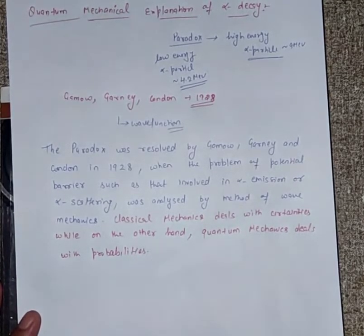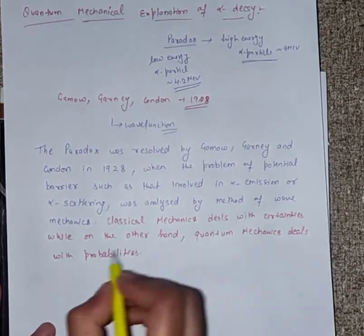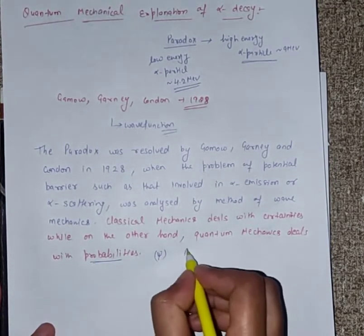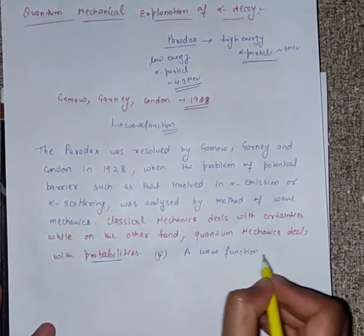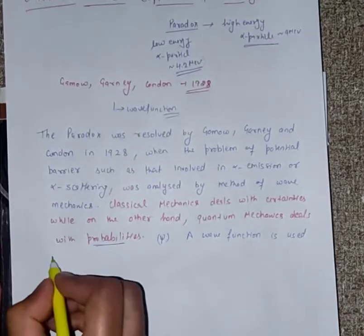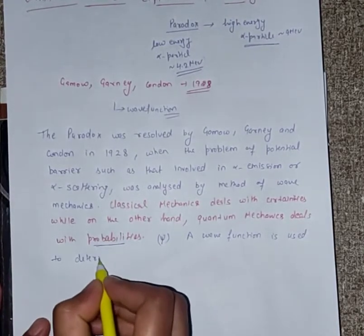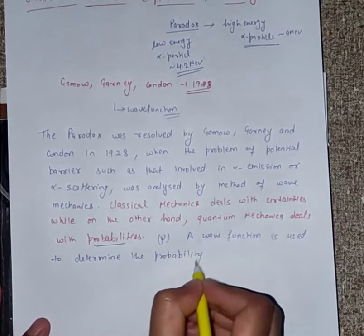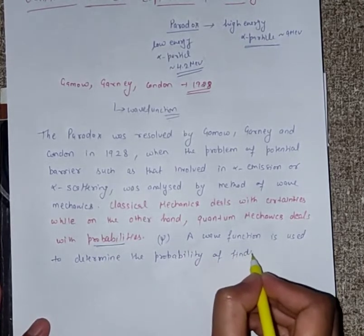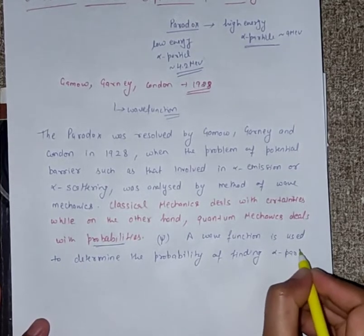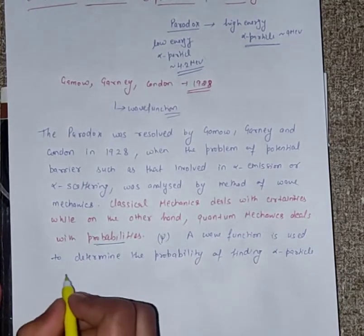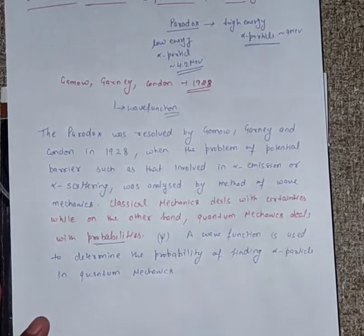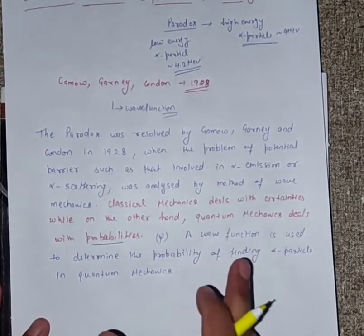When we talk about quantum mechanics, a wave function helps us. To determine the probability, a wave function is used to determine the probability of finding the particle. In quantum mechanics, if we find the probability we need to know the wave function.